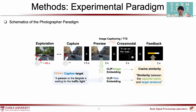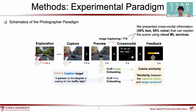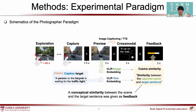Looking at the individual trial more closely: from the start of a new trial, participants fully explore the street and capture a photograph using an MR-compatible joystick. Then, text or voice was presented randomly to potentially explain the scene from the captured image. Lastly, we computed the conceptual similarity between the capture and target and presented the similarity score as feedback, using a multivariate deep learning model called CLIP that can compute similarity between image and text inputs.